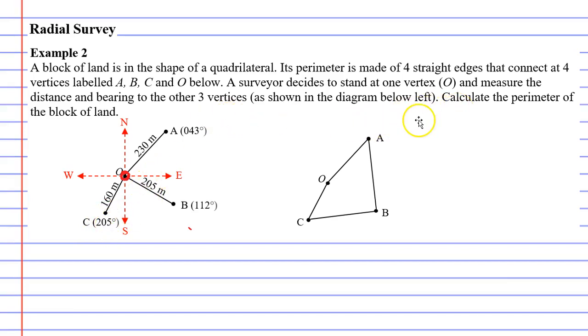Now, it wants you to calculate the perimeter of the block of land. So we've got the one on the left which is what the surveyor did and the diagram on the right which is what the block of land would look like from above. We have some of the information already. We know that this side is 230 meters and this side here is 160 meters. So what we're trying to do is calculate the length of the other two sides. Once we have that information, we can calculate its perimeter.